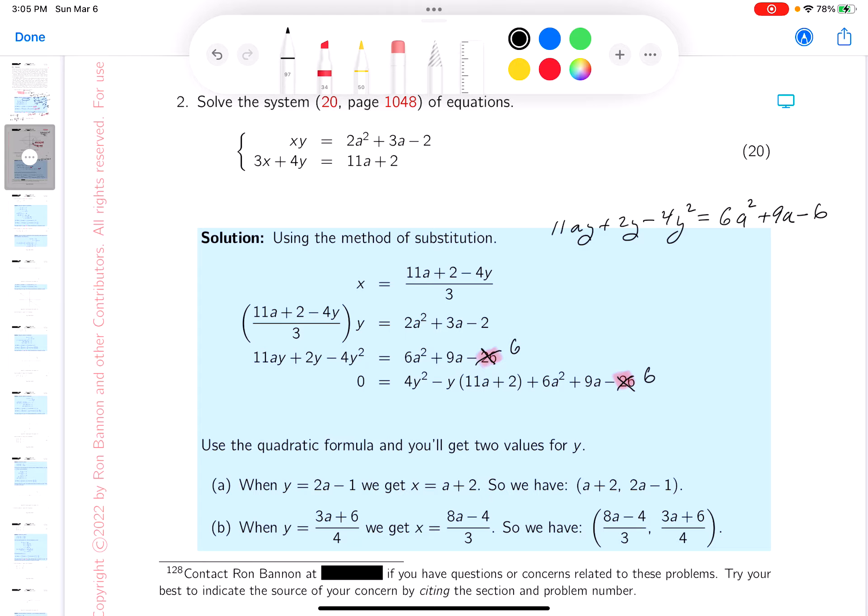Now, the next thing I tell you to do is get it in quadratic form. And that's going to be the standard form of 0. That would be 4y squared. And then I'm going to write down minus, this is the y part of the problem. So minus y times 11a plus 2. And then I get this plus 6a squared plus 9a minus 6.